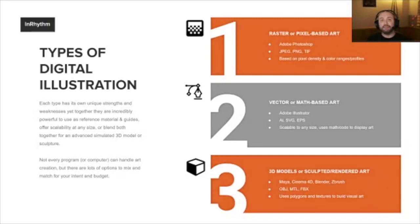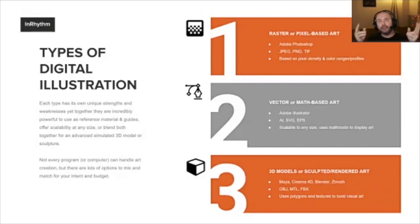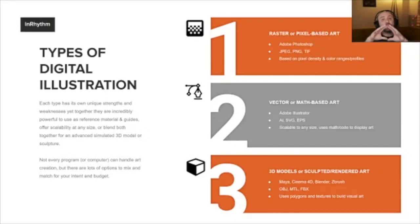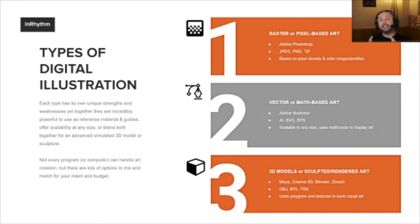Vector or math-based art is the opposite: because it's all equation-based, anything could be 10 to 16 pixels or as big as a house — it doesn't matter, because each line is perfect since it multiplies every time it's scaled. 3D models and sculpted art are kind of a combination of the two, where you have vector forms on three axes — X, Y, and Z — with raster art wrapped around it called a texture.